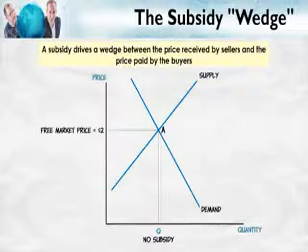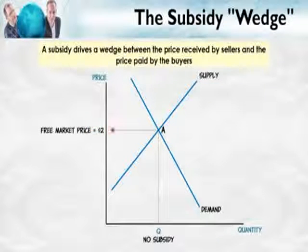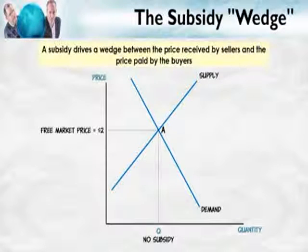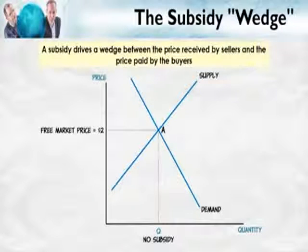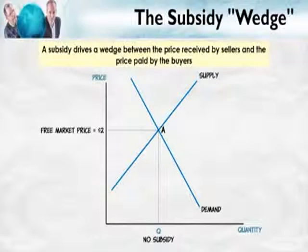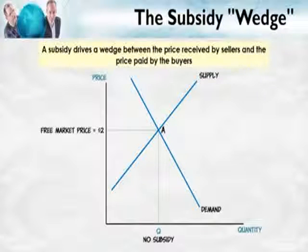We have a lot to cover in this diagram, so put on your thinking hats. We begin, as usual, at the free market equilibrium — let's say that's at a price of $2 and this quantity. I'm going to jump right to the key point, which is that a subsidy drives a wedge between the price received by sellers and the price paid by buyers. With a subsidy, the price received by sellers is going to be more than the price paid by buyers.